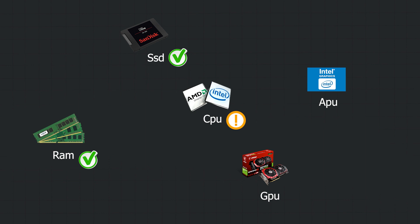The RAM types are DDR4 and DDR3. If you consider this, you can upgrade the RAM and SSD. There is a limited CPU, but you can upgrade it. If you have a CPU, you can also upgrade the CPU. The CPU and APU are related — if you upgrade the CPU, the APU will automatically upgrade as well.